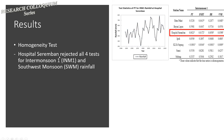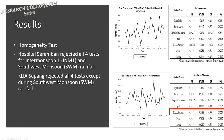Moving on to the findings: for the homogeneity test results, we found that Hospital Seremban rejected all four tests for intermonsoon one and southwest monsoon rainfall. The p-values for the four tests are less than 0.05, therefore this station is deemed inhomogeneous. In the figure you can see a break occurred at 1998 and later at 2012. Similar results were also seen at KLIA Sepang for the southwest monsoon season.